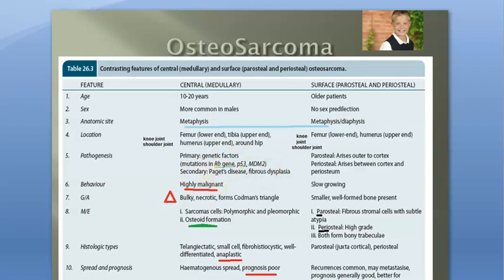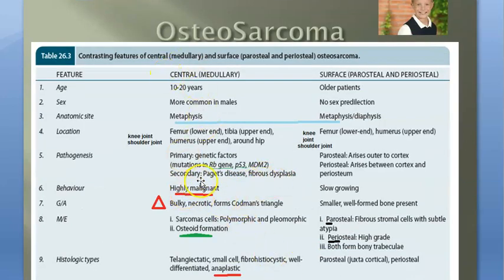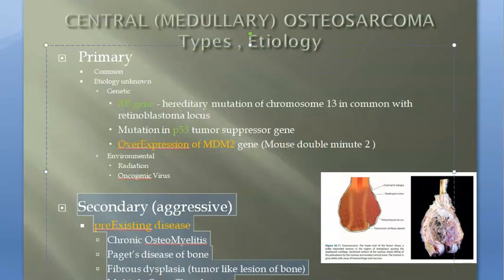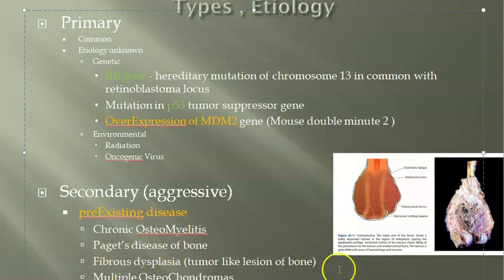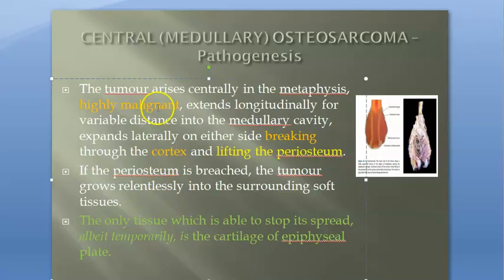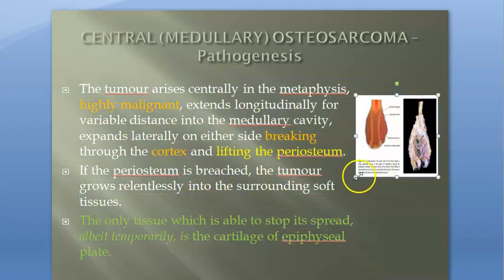Secondary osteosarcoma arises from a pre-existing disease, which could be Paget's disease of the bone, fibrous dysplasia, or chronic osteomyelitis. The central type is highly malignant - it has osteoid formation and new bone formation. The classic central or medullary osteosarcoma has a poor prognosis. Primary causes include RB gene and p53 mutations and MDM2 overexpression.